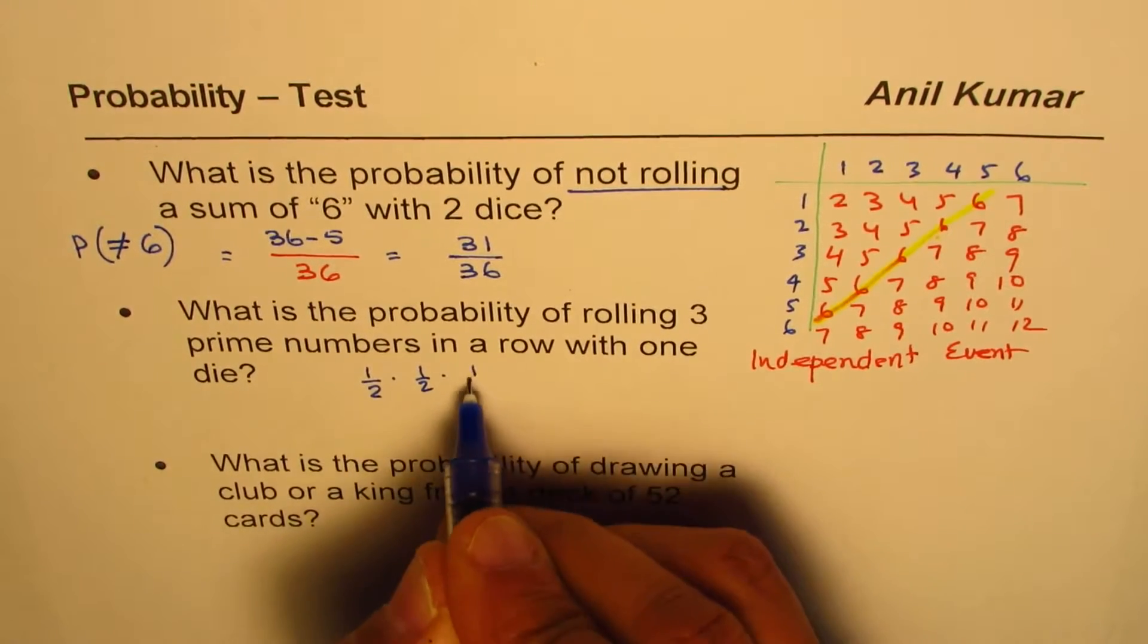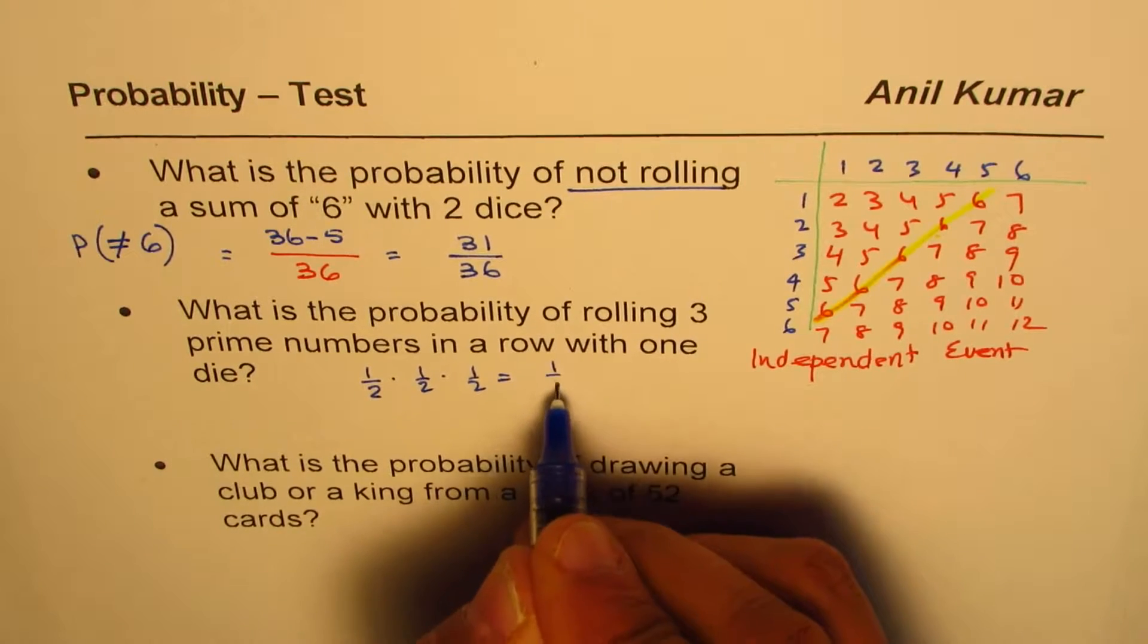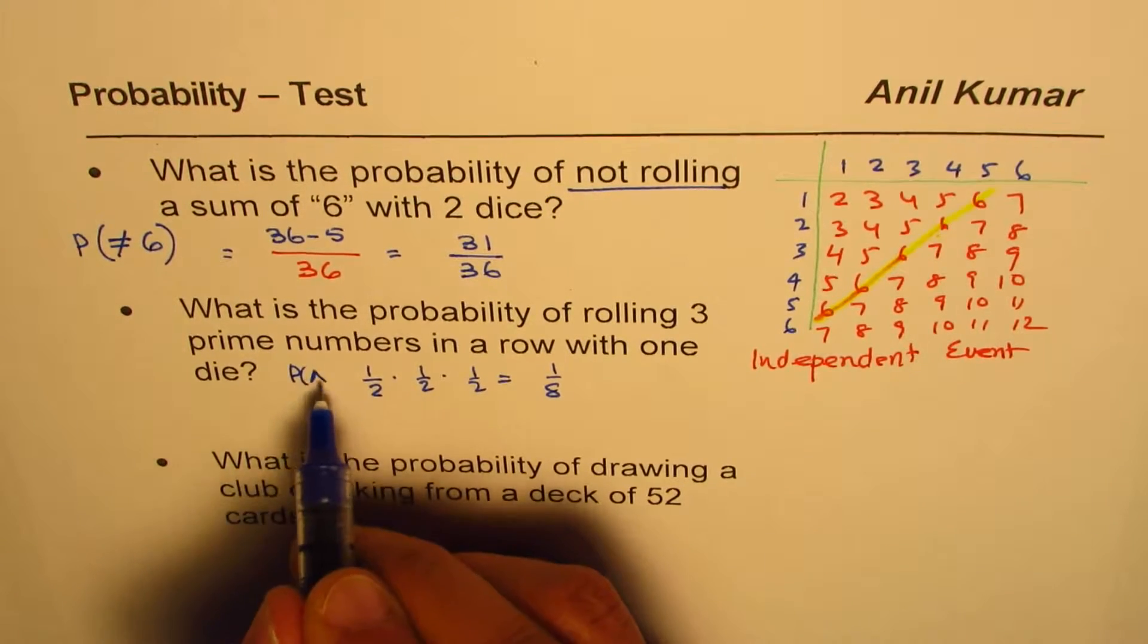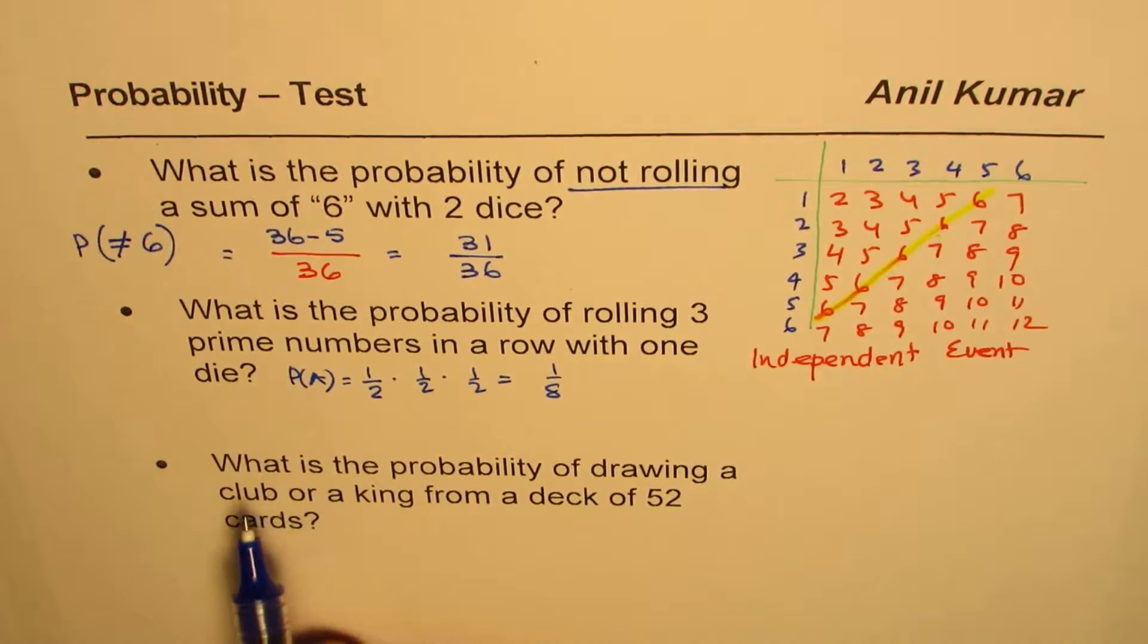The result of the first does not really affect the result of the next. So therefore it just gets multiplied and what you get here is 1 over 8. You could write 1 over 2 whole cube also. So that's the probability of rolling three times.